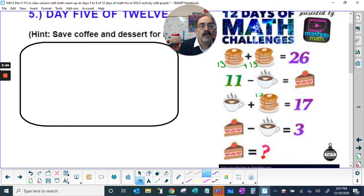Well, if pancakes are thirteen, what number plus thirteen is seventeen? Minus thirteen gives us a four. So coffee cup is four. Coffee cup is four. Coffee cup is four.